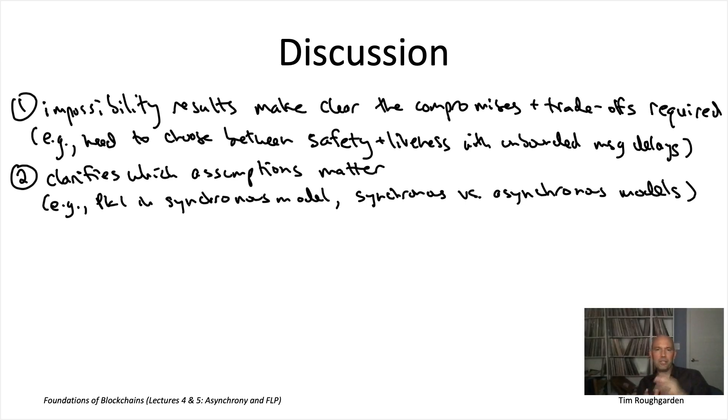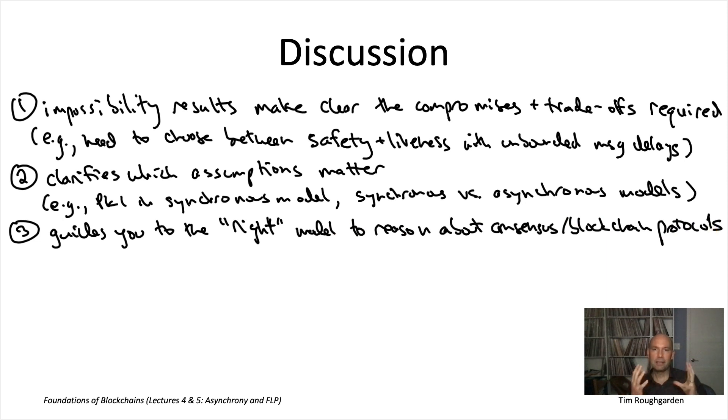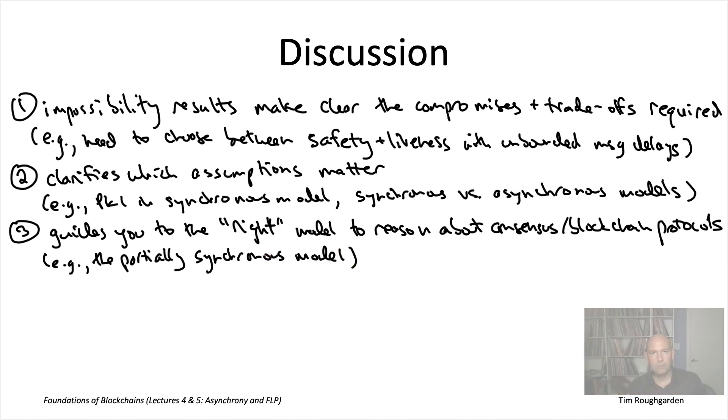My next point will lead directly into what we'll discuss in lecture six, the partially synchronous model, which is that impossibility results like FLP impossibility really guide us toward the right sweet spot model for reasoning about things like consensus protocols. They guide us to definitions that we would not come up with were it not for the impossibility result. Toward the beginning of lecture six, I'm going to write down a formal definition of this partially synchronous model. And if I just pulled that out of a hat, like at the beginning of lecture two, I would lose all credibility with you. I'd write that down and you'd be like, this is confusing.